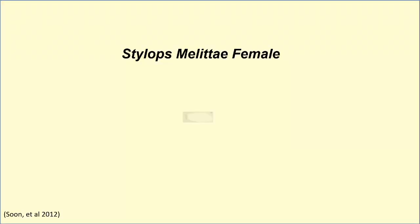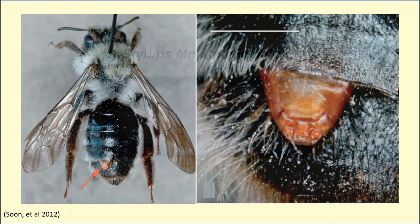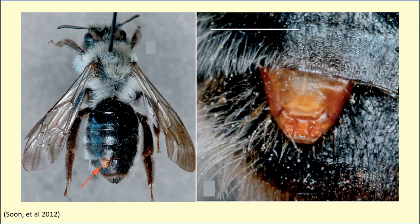However, the females of Stylops metidae are obligate endoparasites. This means that affected bees can be easily recognized by identifying the yellowish cephalothorax of the female that protrudes through the abdominal sections of the affected bees.